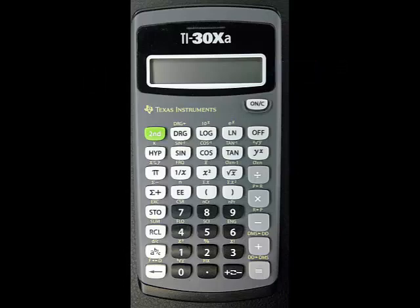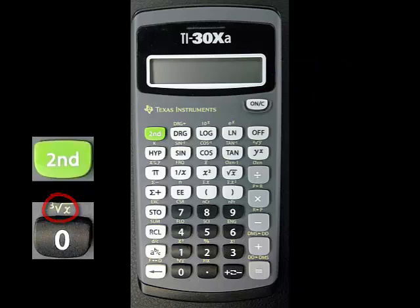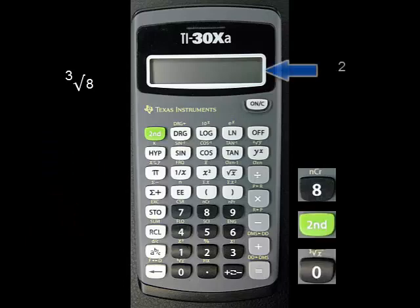The cube root, or third root, has its own button. It is the second function of the 0 key. To find the cube root of 8, press 8, then 2nd, then 0. The answer 2 should appear on the screen.